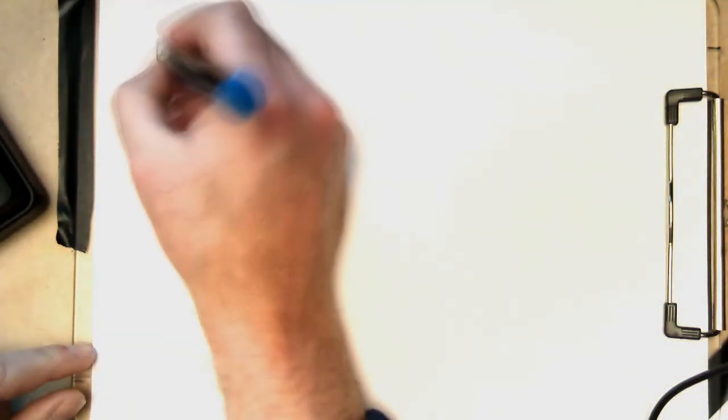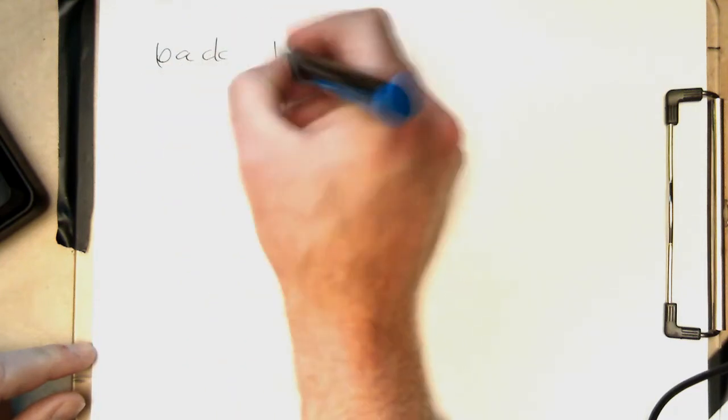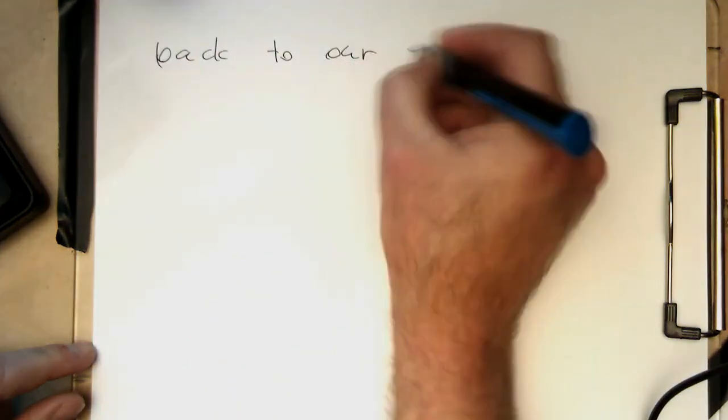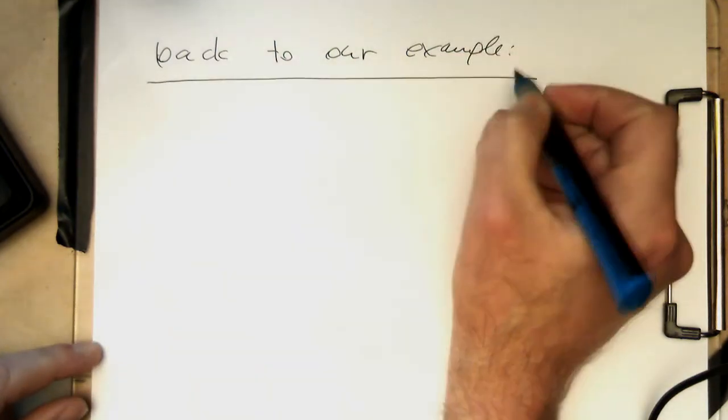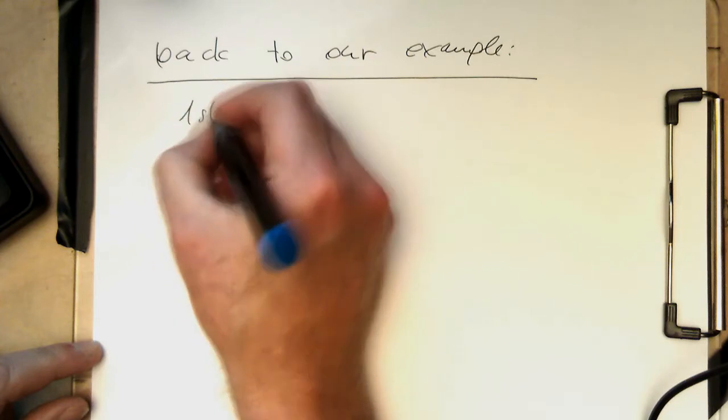Let's get back to our example and doing the pre-warp there. Back to our example, our first-order low-pass filter.